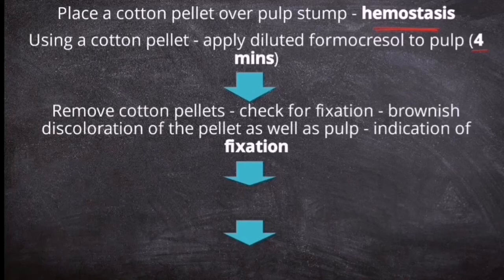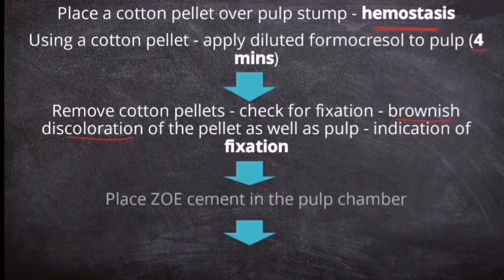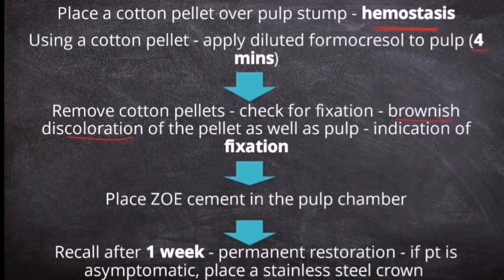After 4 minutes, remove the cotton pellet and check for fixation. How do you check for fixation? Just see if there is a brownish discoloration of the pellet as well as the pulp. If that brown color is there, it shows that it has been fixed properly. Then you place zinc oxide eugenol cement in the pulp chamber. After 1 week, you can recall the patient, and if the patient is asymptomatic, you can place a permanent restoration followed by a stainless steel crown.